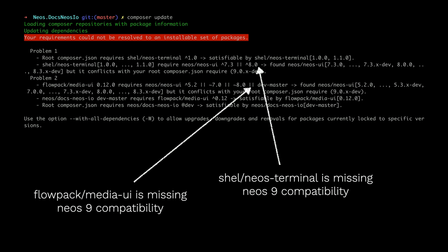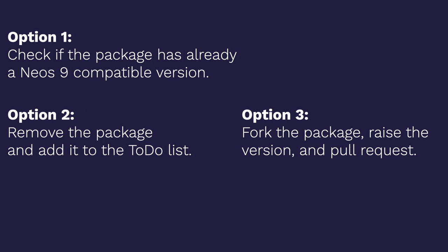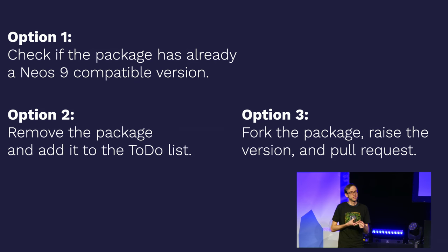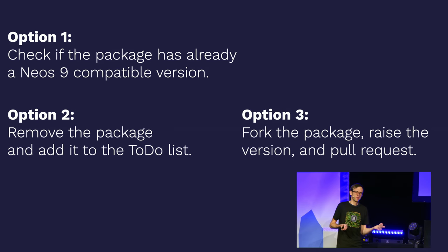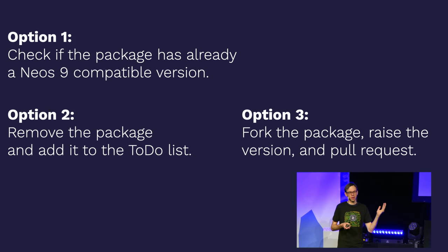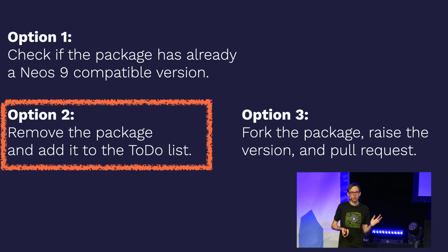Option one: check if the package already has a Neos 9 compatible version on GitHub — browse the Composer JSON and see if there's compatibility. Option two: remove the package and remember it on your to-do list. Option three: fork the package, raise the version, and do a pull request. For these two packages that weren't required for running the website, I just removed them for now.